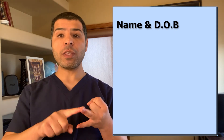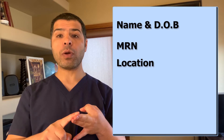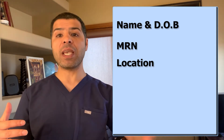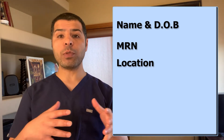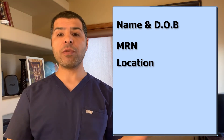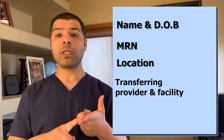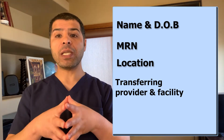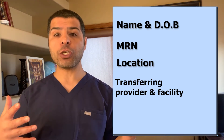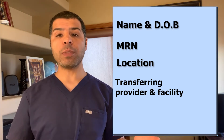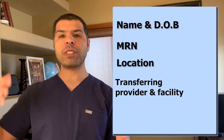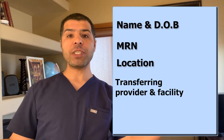Every time you get a call about an admission, make sure you get the following information: patient name and date of birth — write them down; their medical record number and location. Don't hesitate to ask the physician to repeat or spell the name. If the patient is coming from outside as a direct admission or transfer, also get the name of the transferring provider, the name of the transferring facility, the estimated arrival time, and make sure to tell them to update you on any significant changes in the patient's clinical condition, any relevant new labs or imaging, or anything that may affect your clinical management until they arrive.